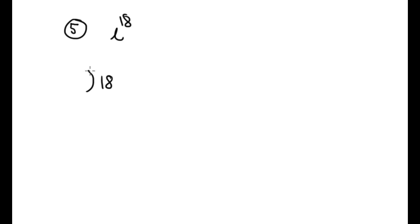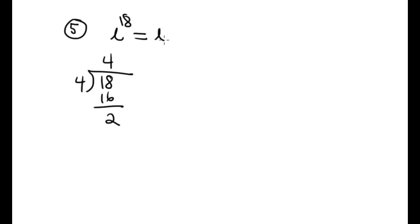Number 5 is i to the 18th power. Again, 18 divided by 4: 4 times 4 is 16, remainder 2. So i to the 18th is equivalent to i squared, and i squared equals negative 1. That is the answer: negative 1.